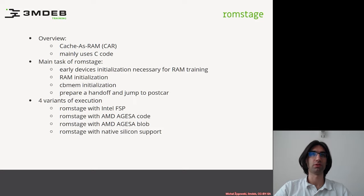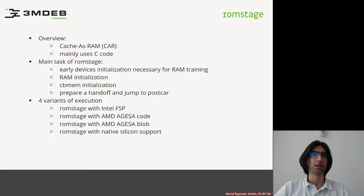The main purpose of the ROM stage is to initialize the hardware necessary for RAM training, train the main memory, and then initialize the CBMem and prepare a handoff to postcar. The CBMem is a reserved coreboot memory to hold various coreboot-specific information, and the handoff to postcar is a structure passed to the next stage containing information necessary for postcar to operate.